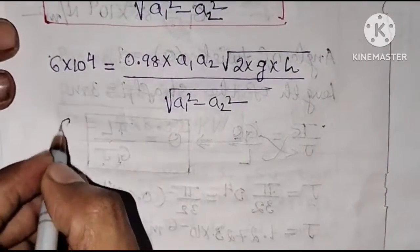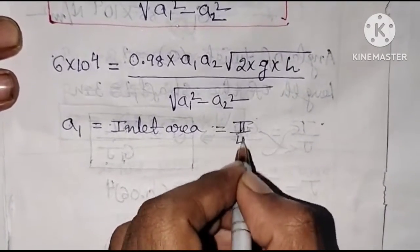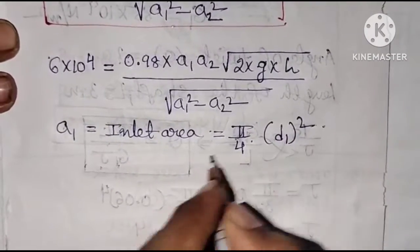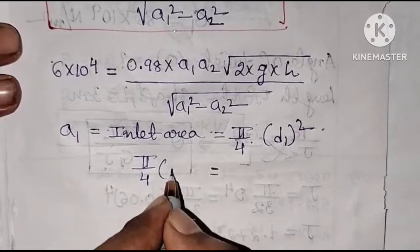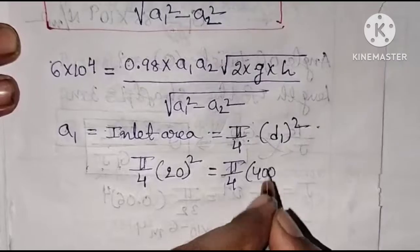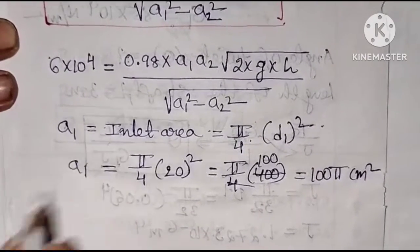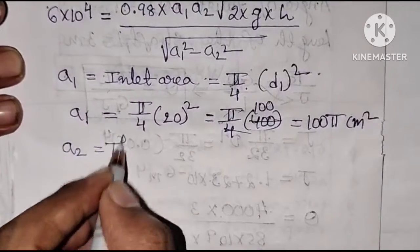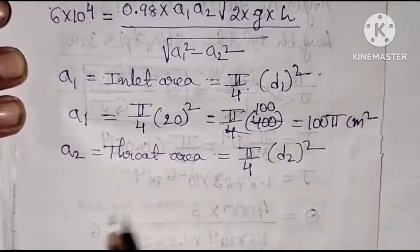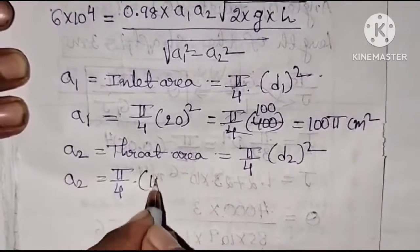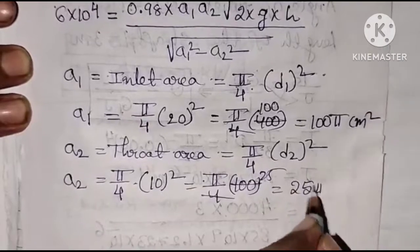Here a1 means inlet area. Inlet area formula is π/4 into D1². So a1 equals π/4 into 20², which gives 100π cm². And a2 means throat area. Throat area a2 equals π/4 into D2², so π/4 into 10² equals 25π cm². So now we have a1 and a2.